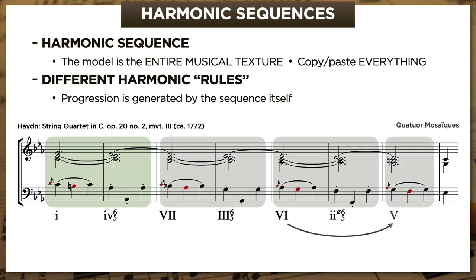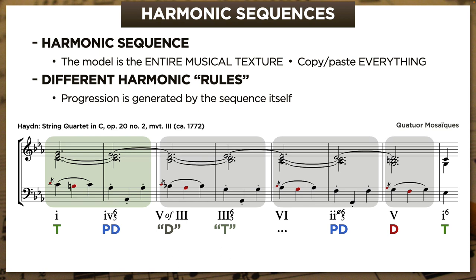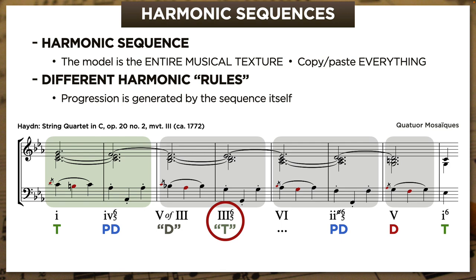So how does this progression generated by the sequence square with what we know about functional harmony? We're going to start by changing that big Roman numeral VII to ♭5/3. But with that done, it's actually possible to tease out a coherent series of harmonic functions here—at least hypothetically. But let's not breeze past the III6/5 chord. When we learned about III in minor, we saw that it had a tonic function but that it also pretty much only appeared as a root position triad. III6/5 is not really a thing, except in harmonic sequences.